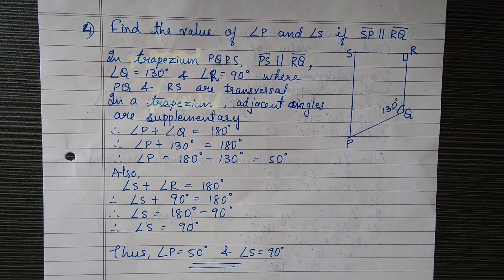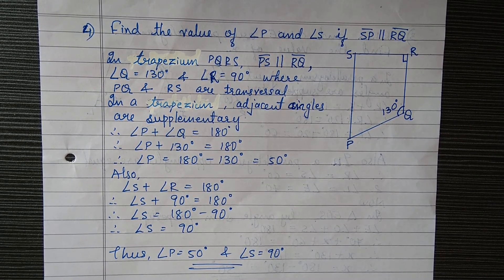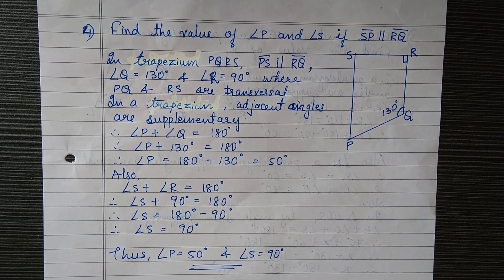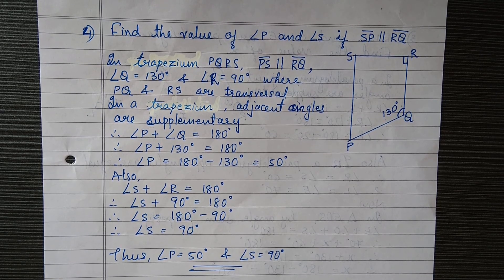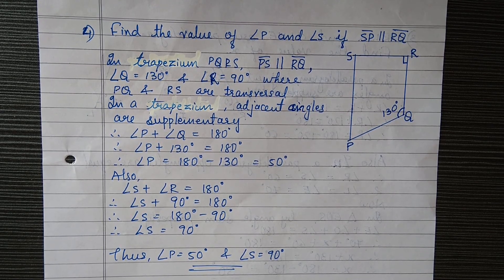So we got the value of angle P as 50 degrees and S as 90 degrees, which we had to find. Here I am completing our chapter number 3, which was about quadrilaterals and different types of polygons.